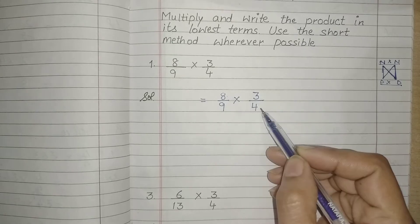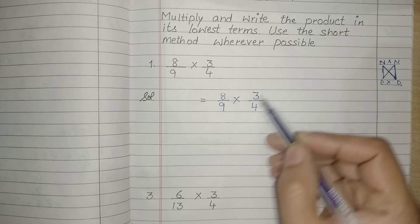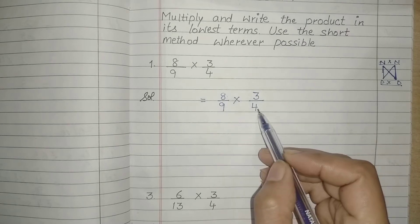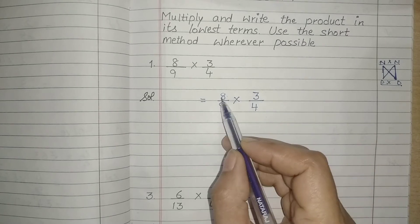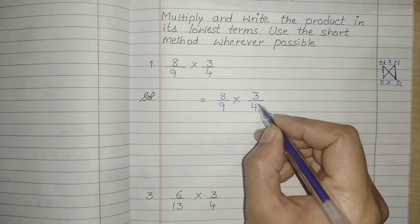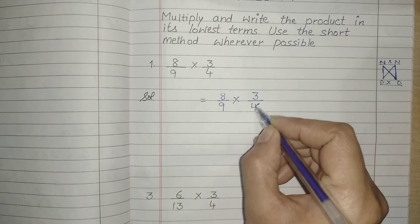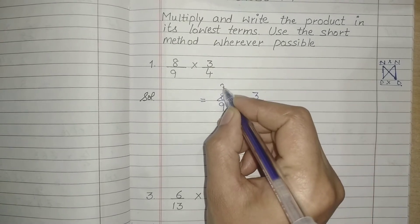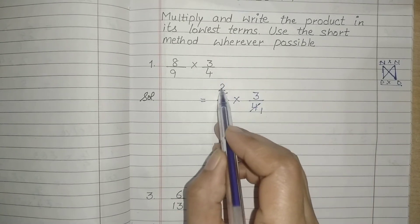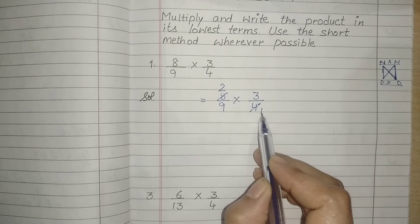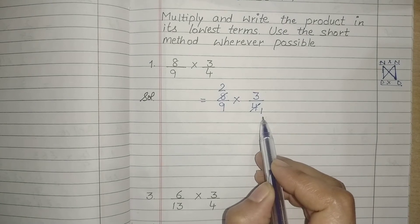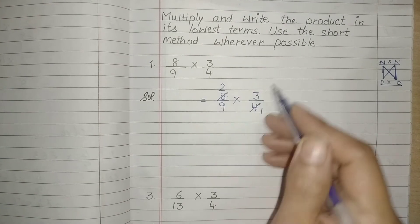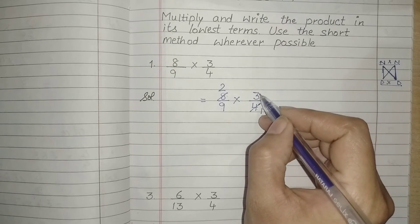So now we will see how we can cancel it. Yes, it is possible in cross. 8 is in the table of 4. So let's cancel it out. 4 fours are 8. We put the answer on top and below. And as we have these numbers left here, we will also have 3 in the table.